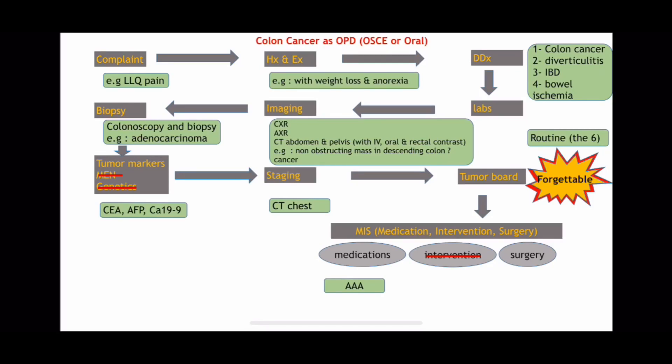The third point is surgery. For surgery, you have two things to consider: preparation and consent. Preparation — you have to prepare the patient for bowel surgery, and that will be discussed in a different presentation, as preparation has its own items for all surgeries. For consent, it has standard items to mention: the type of surgery, why it's needed, whether there's an alternative, possibility of abortion of the procedure, whether it will be done laparoscopically or open, and complications should be included.